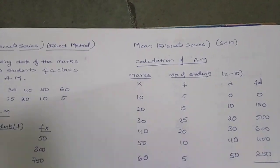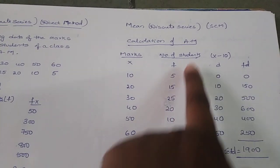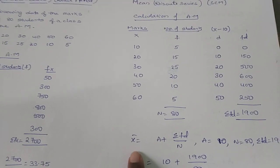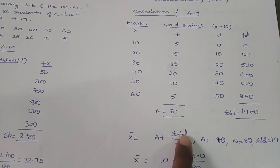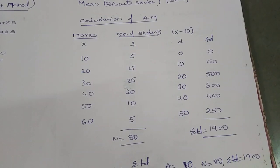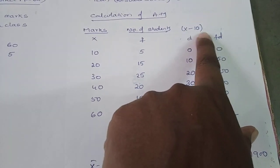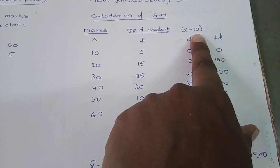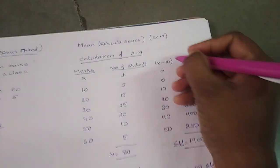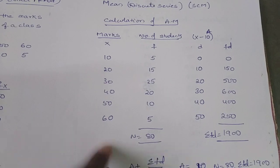Now I will explain the shortcut method using the same question. Marks x and number of students f remain the same. In the shortcut method for discrete series, the formula is: Mean = A + σfd / n. We need to calculate d, which is x minus A, same as in individual series.